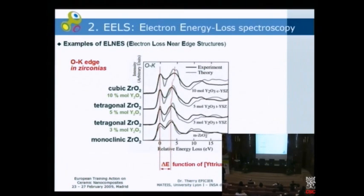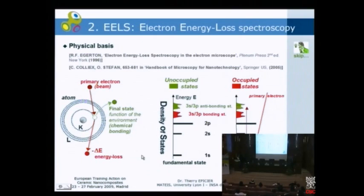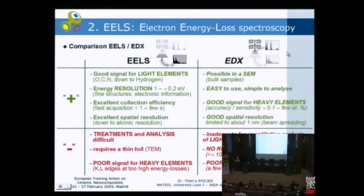Another nice example shows the oxygen K-edge in various zirconia materials. Two main peaks are visible, and the energy distance between them is clearly related to the amount of stabilizing yttria oxide. I will skip the detailed comparison between EELS and EDX and move to energy-filtered TEM.